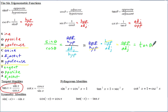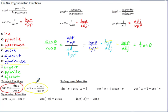Similarly, since cotangent is the reciprocal of tangent, one way of looking at it is it's adjacent over opposite. But since tangent is sine over cosine, cotangent would be cosine over sine.